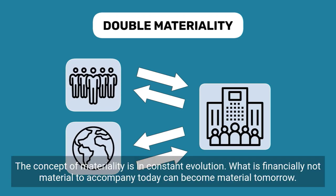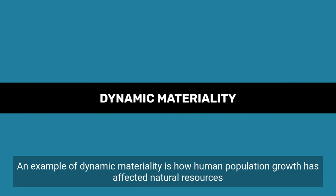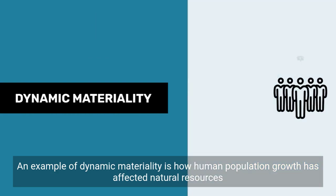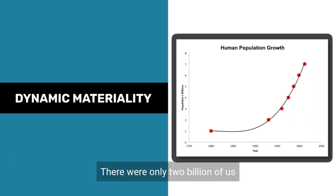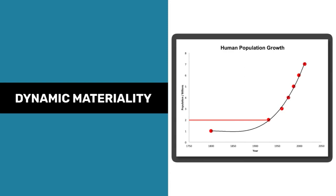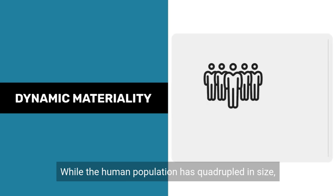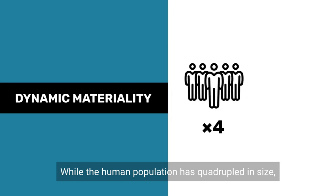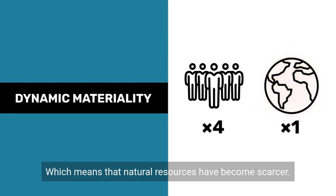The concept of materiality is in constant evolution. What is financially not material to a company today can become material tomorrow, a process called dynamic materiality. An example of dynamic materiality is how human population growth has affected natural resources. A century ago, there were only 2 billion of us. Today, this number has reached 8 billion. While the human population has quadrupled in size, the planet did not, which means that natural resources have become scarcer.